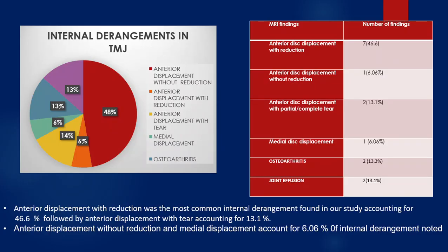Based upon our study, we concluded that anterior displacement with reduction was the most common internal derangement found. This graphical pie chart shows the derangements obtained by studying the patients in our study.